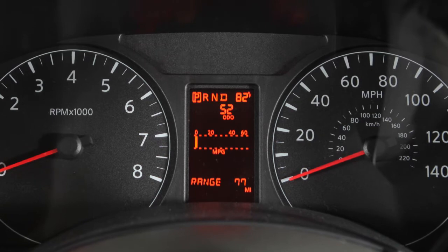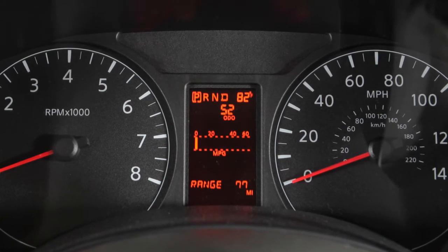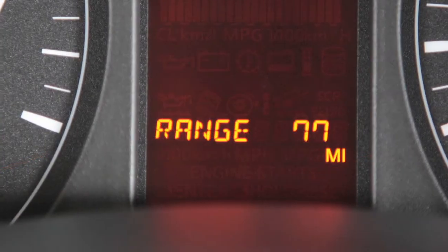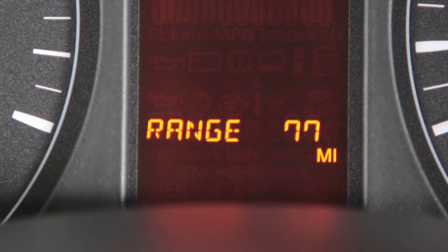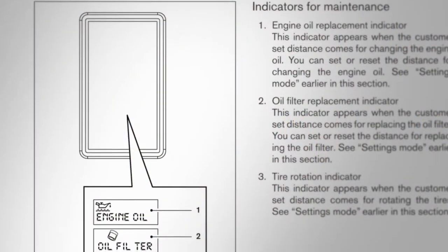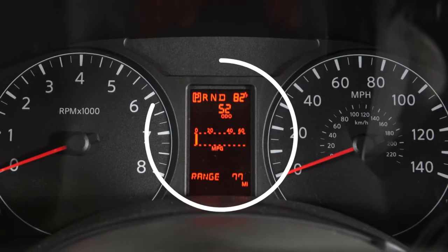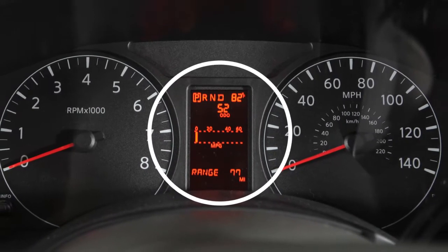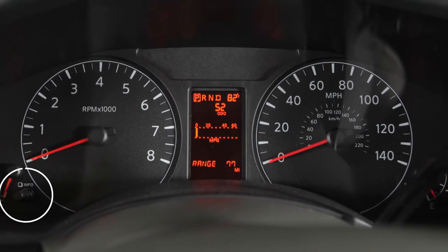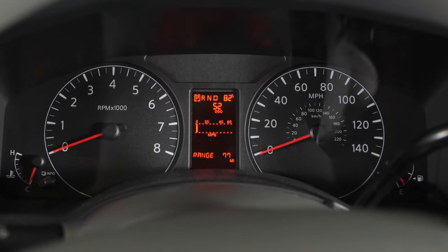Your new vehicle is equipped with a vehicle information display system that monitors a host of vehicle functions. Vehicle information is displayed in a monitor located to the left of the speedometer. Its info button is just to the left of the tachometer.